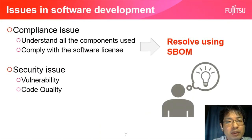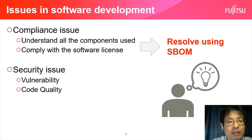Here is a summary of the software development issues we have discussed. The first is compliance: you need to know all of the software components used in the product, and you must comply with the software license and copyright. The second is security: you need to identify the vulnerabilities in the software included in the product and address them if necessary. You also need to ensure code quality.